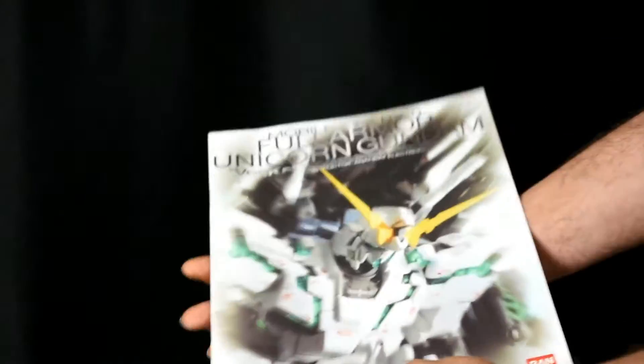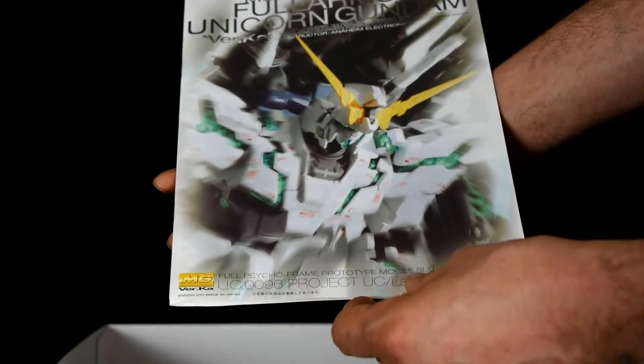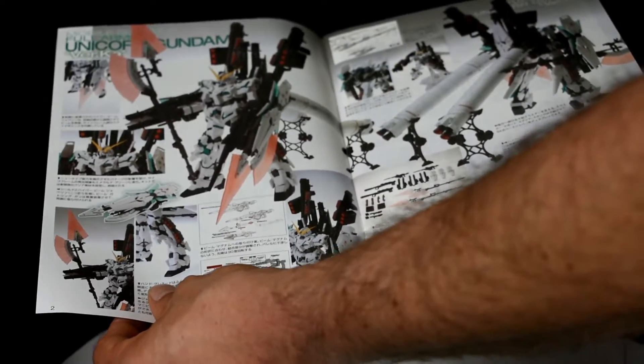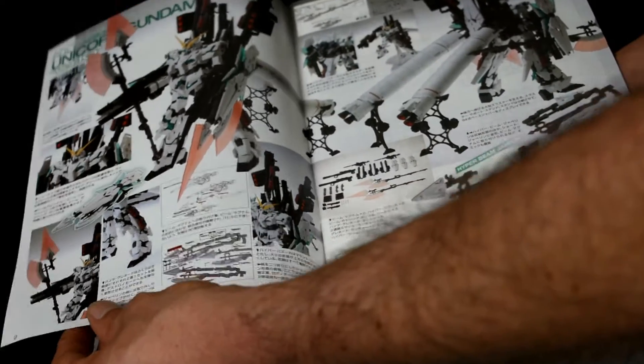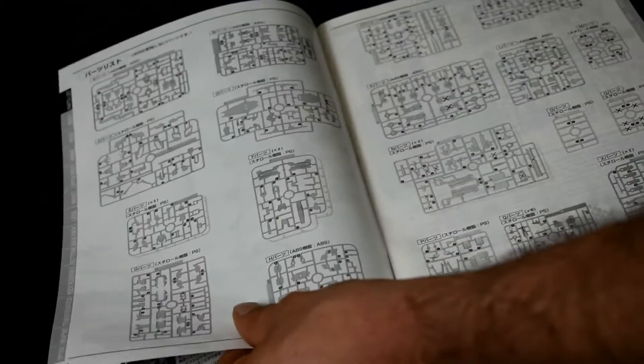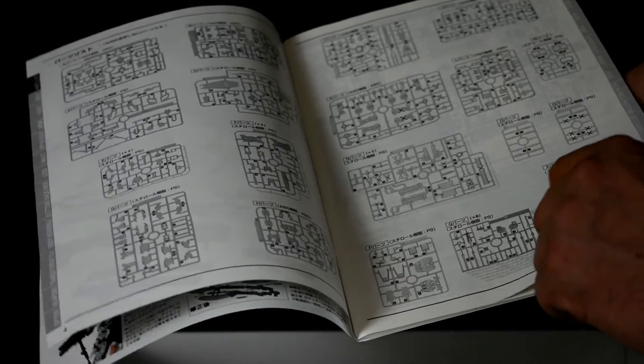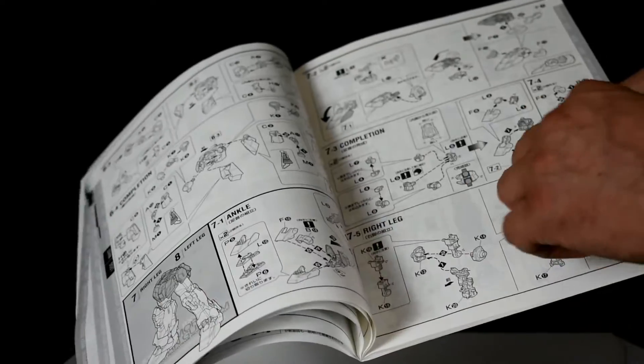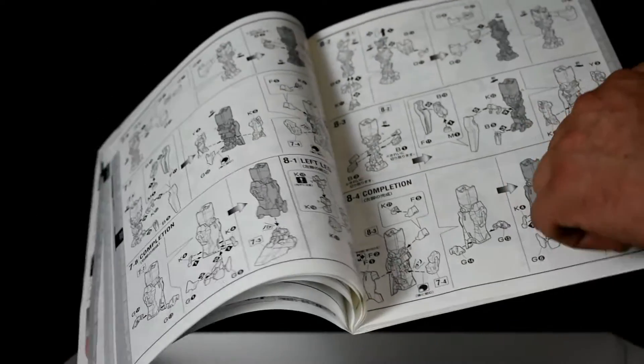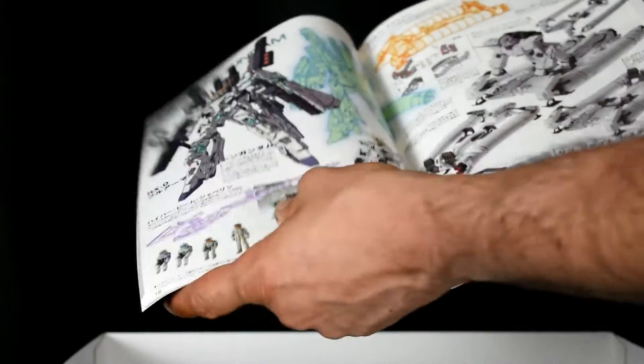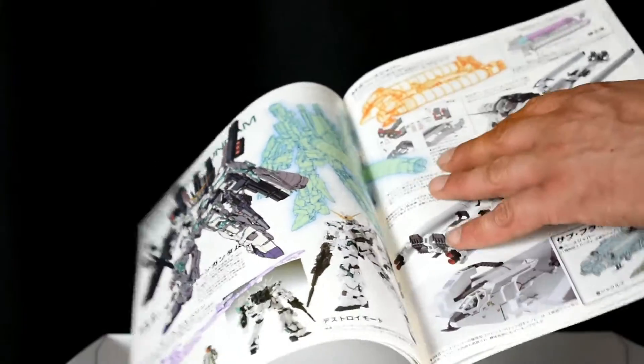And the manual. Some more illustrations on the cover of the bust. Some more illustrations of the finished product including the weapons. Your runners, your builds. This is a lot bigger manual than a standard Master Grade.